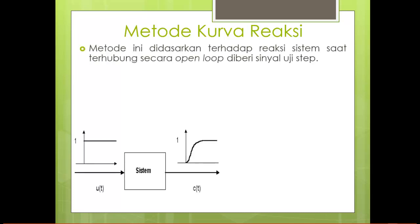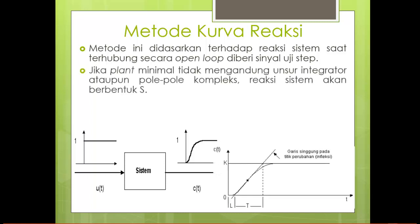Pada metode kurva reaksi, metode ini didasarkan terhadap reaksi sistem saat terhubung secara open loop dan diberi sinyal uji step. Untuk metode kurva reaksi, dilakukan dengan cara terhubung secara open loop kemudian diberi sinyal uji step. Hasil dari respon yang terjadi pada plant tersebut akan membentuk sebuah kurva S sebagaimana di dalam gambar.